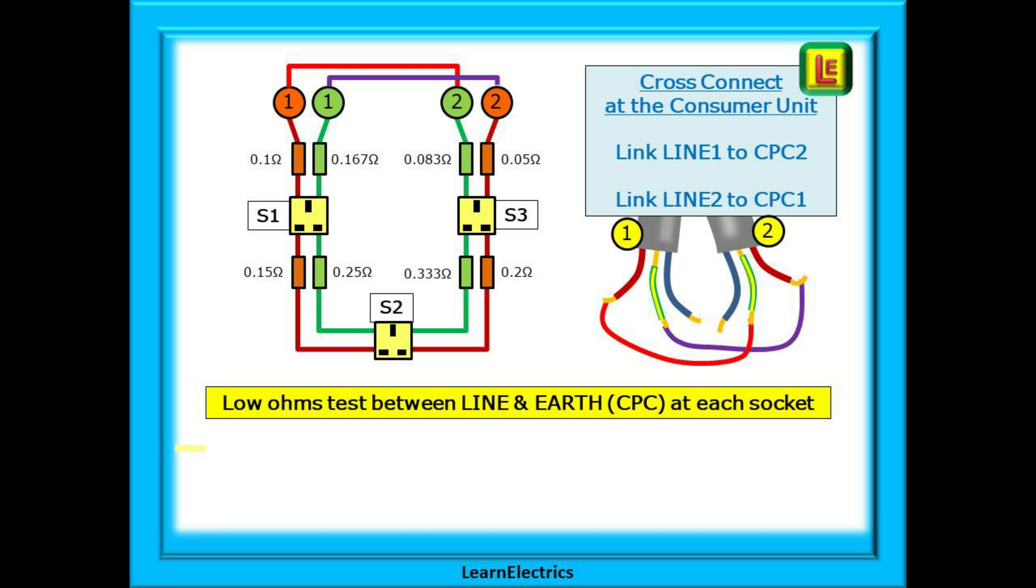Now we need to cross connect the cable ends at the consumer unit using crocodile clips, terminal blocks or WAGOs. Link line 1 to CPC2 and then link line 2 to CPC1. Pay attention to the cross connection, it must be as shown, anything else will just not work.